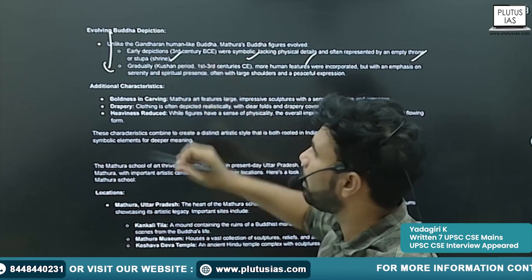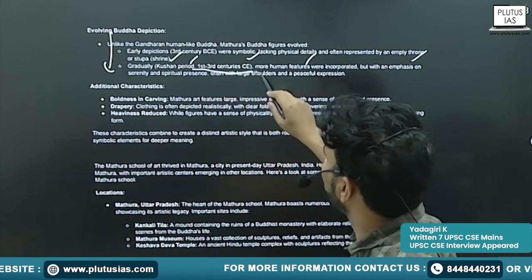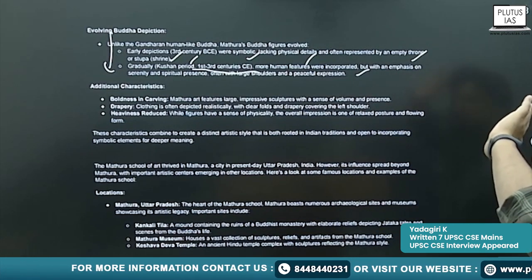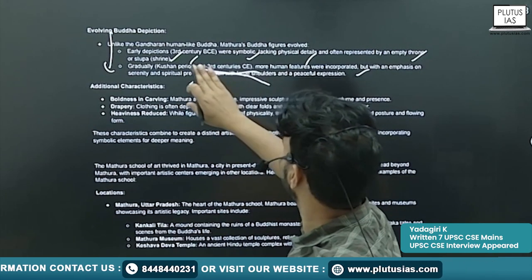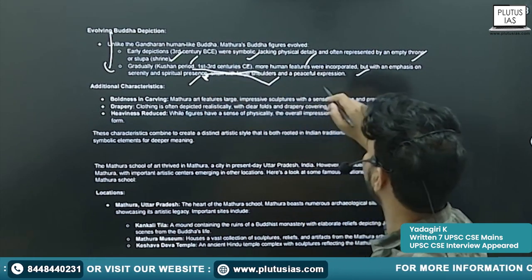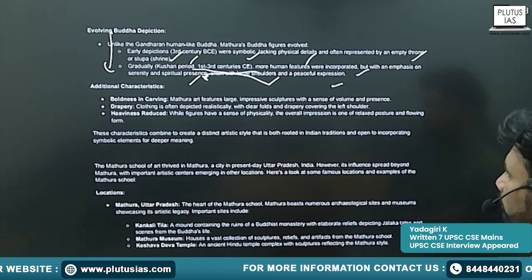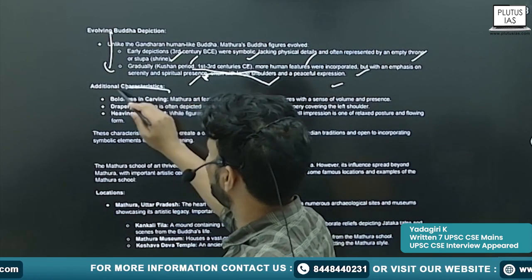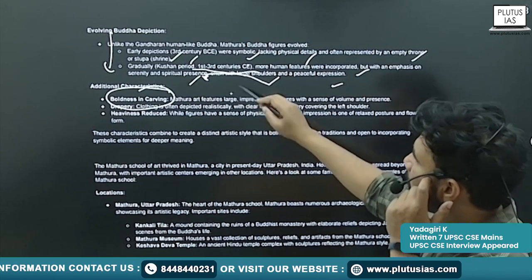Gradually, by the Kushan period, more human features were incorporated but with an emphasis on serenity and spiritual presence — often with large shoulders and a peaceful expression — in the Mathura School of Art.